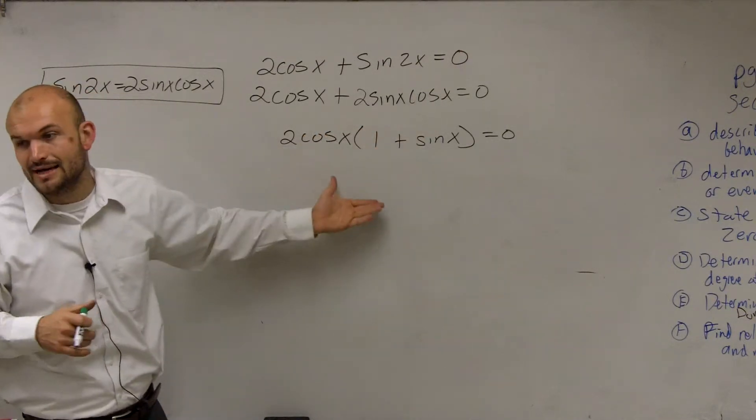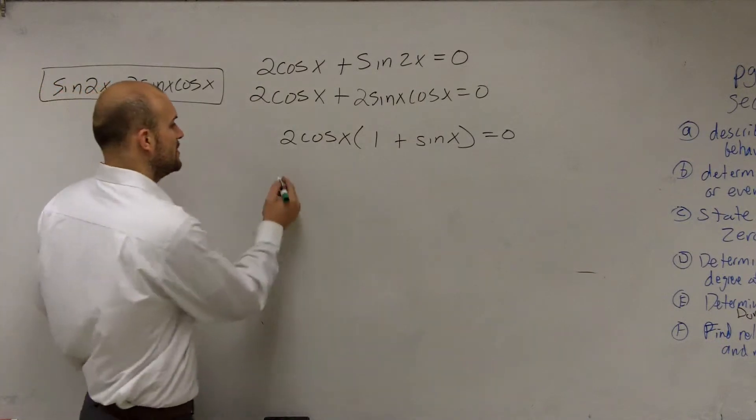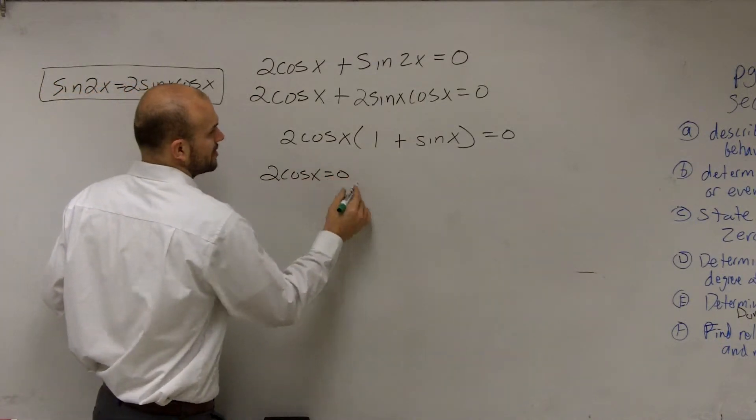So now, since I factored out, now I have a product that's going to equal zero. Now, I can apply the zero product property.